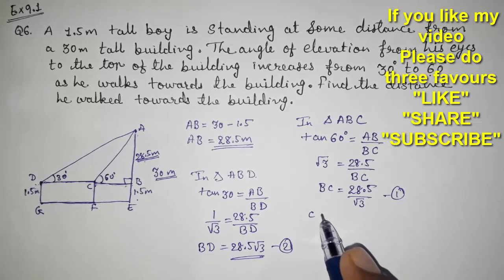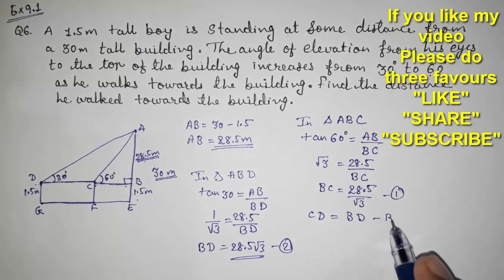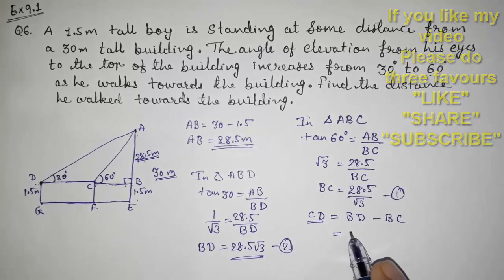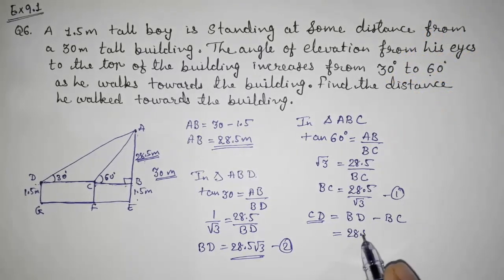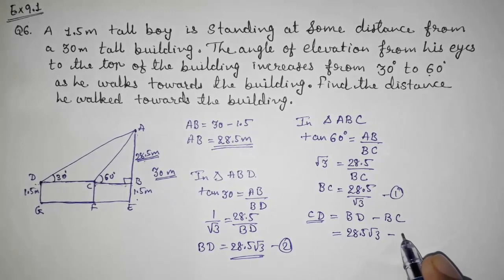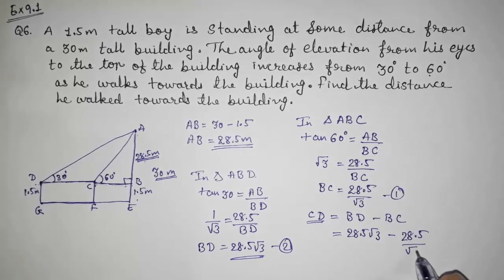We want to find out CD. Therefore BD minus BC equals CD. This is the distance he walked.